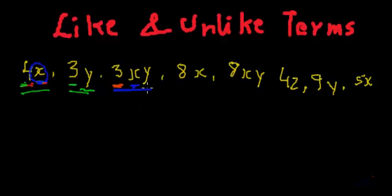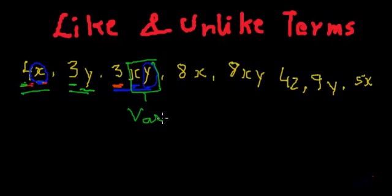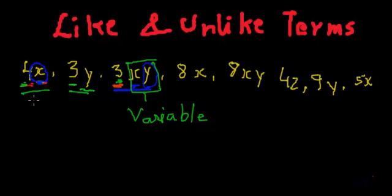Along with the x in 3xy, we have one more variable which is y. So the total variable part in the term 3xy is actually xy. We are taking care of only the variable part, and we want the same variable part in those terms called like terms. So definitely 4x and 3xy are not like terms, because the variable part is different.